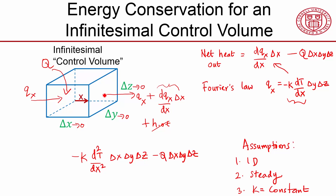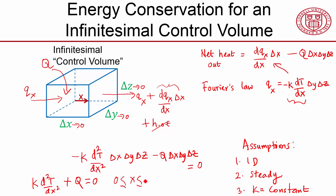If energy is conserved with no other effects, the net heat out minus the heat added equals zero. Dividing through by delta x delta y delta z gives the final governing equation: k times d²T/dx² plus q equals zero. That's called the heat equation, and it represents energy conservation for an infinitesimally small control volume. This is defined over the length of the bar, and we need to add boundary conditions, which I'll do when I summarize the mathematical model.